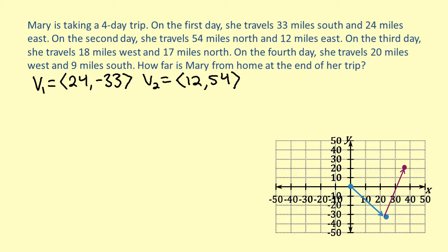We still need two more vectors. For our third vector, we know Mary traveled 18 miles west and 17 miles north on day 3. This means our third vector is -18, 17. Now, because we're moving west, the vector is pointing toward the negative x-direction.